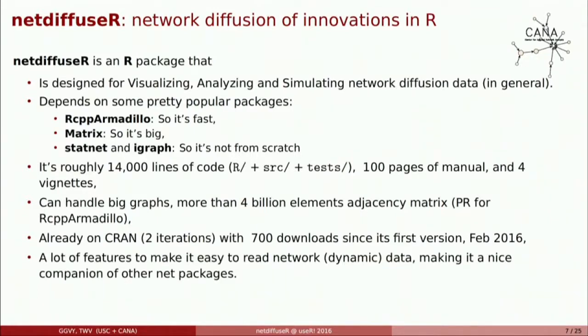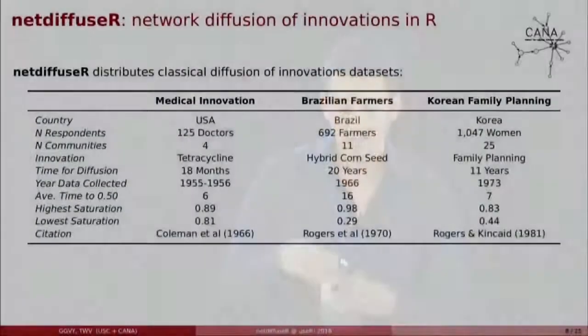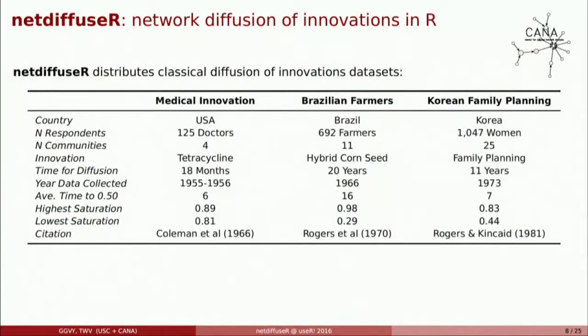It also features that make it really easy to read a dynamic graph, which makes it nice to work with other packages. It includes three very popular classical datasets for the diffusion of innovation: the medical innovations data, Brazilian farmers, and Korean farmers family planning. I'm not going into details on these, but you can check them out later.